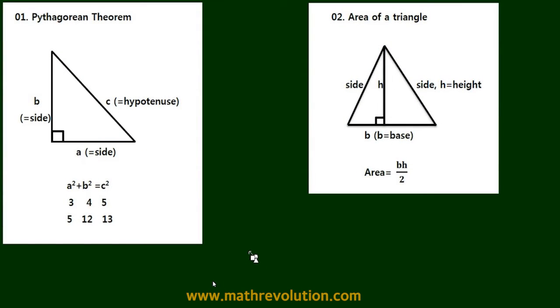In this video, we're going to go over some basic formulas for a triangle. First, we have the Pythagorean theorem, which is a squared plus b squared equals c squared. We also have the area of a triangle, which is base times height over 2. So these are the basic equations.